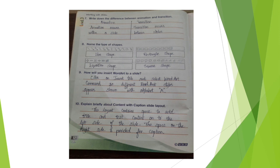Name the types of shapes: line shape, rectangle shape, equation shape, and square shape. To insert word art, click on the Insert tab and select the word art command; 30 different word art styles appear shown with the alphabet. Content with caption layout: this layout contains space to add title and text content on the left side of the slide, and the space on the right side is provided for the caption.